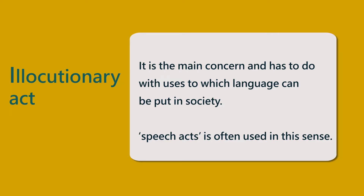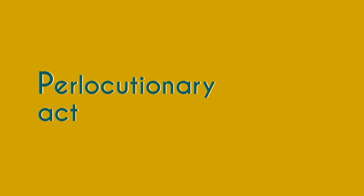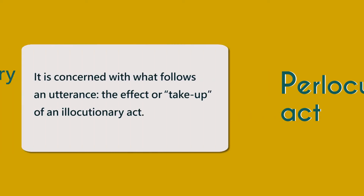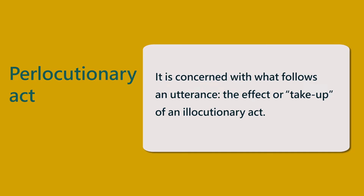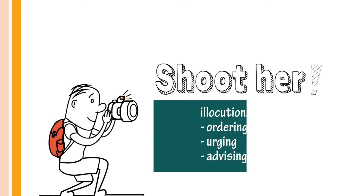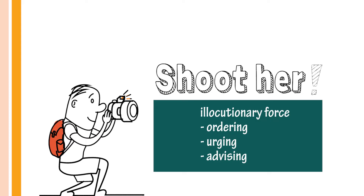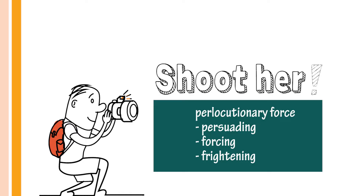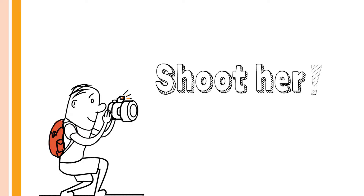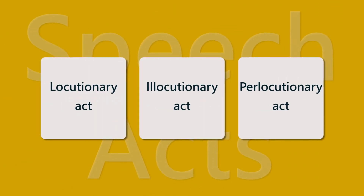In fact, a lot of times when you say 'speech act' or 'speech acts,' you're referring to illocutionary acts. The third element in the theory is called the perlocutionary act. The perlocutionary act is concerned with what follows an utterance — it has to do with the effect or uptake of an illocutionary act. Perlocutionary effects are less conventionally tied to linguistic forms and have therefore been of less interest to linguists. This video is about these three terms, which are key to speech act theory.